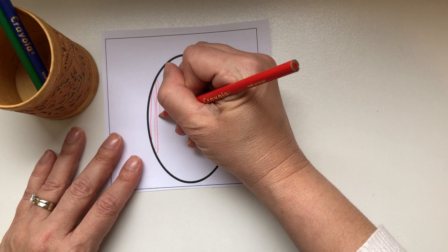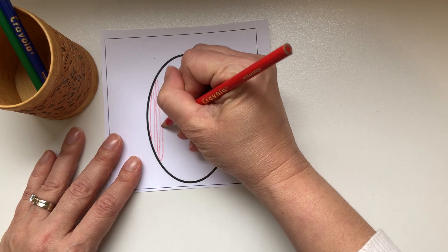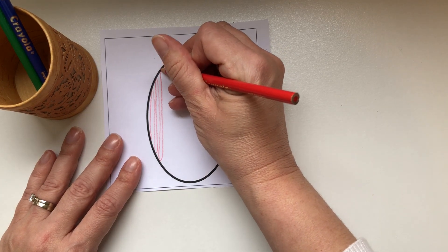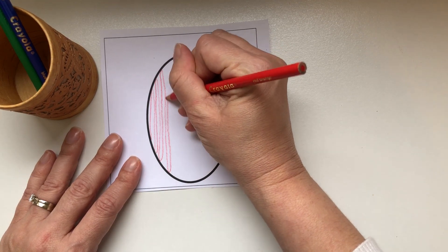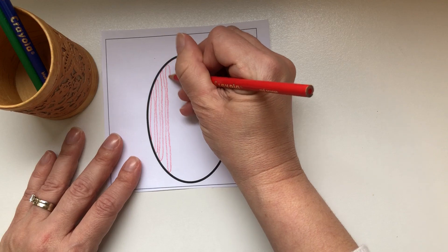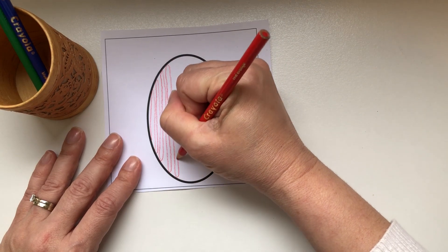When you show it, show the lines very close together. The child when they begin may not be able to make the lines this close and that's fine. They're working towards refinement and care of motion.